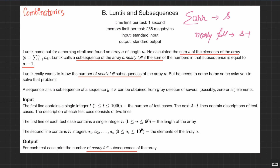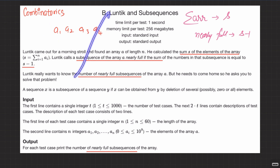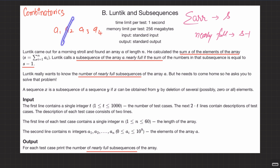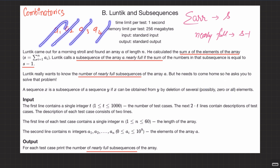Now, what is a subsequence? A subsequence is obtained by removing 0 or more elements from the array. For example, if you have [A1, A2, A3, A4], you can remove A2 and A3, or remove no elements, or remove A4 — all valid subsequences. It is different from a subarray or subsegment, which is a contiguous part. A subsequence is obtained by deletion of several, possibly 0 or all elements.